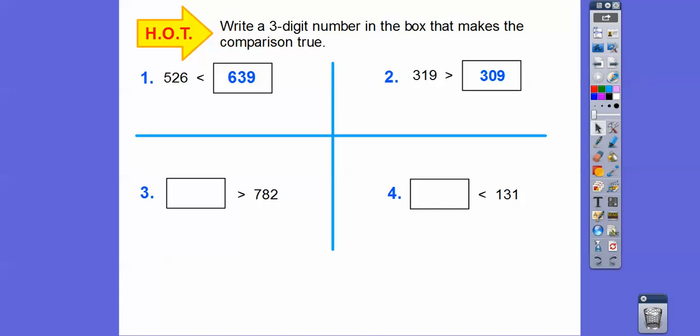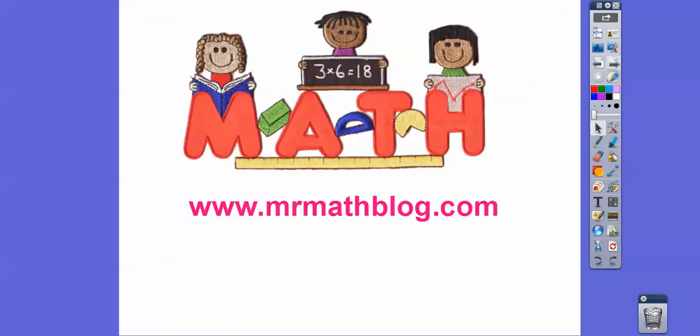Over here, 782, we just want to do a bigger number than 782. I did 792. We can do any number here, we could do 921 or whatever, just as long as it's greater. So the 7s here are the same, but the tens digits, this 9 is greater than that 8 right there. So we've got to pick a number that's less than, so a smaller number over here than 131. So I did 123. And here, the tens digit is less than that tens digit right there. All right, you guys, I hope you're having a good time in math, and take care.